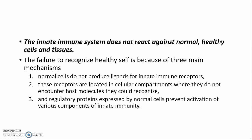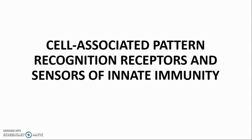The innate immune system does not react against normal, healthy cells and tissues. The failure to recognize healthy self is because of three main mechanisms: 1. Normal cells do not produce ligands for innate immune receptors. 2. These receptors are located in cellular compartments where they do not encounter host molecules they could recognize. 3. Regulatory proteins expressed by normal cells prevent activation of various components of innate immunity.